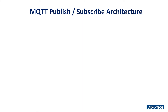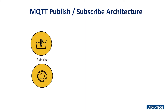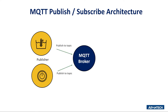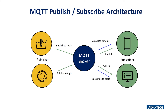From the MQTT publish and subscribe architecture, we can better understand how MQTT protocols work in IoT environments. Publishers such as remote temperature sensors or power meters publish real-time data to an MQTT broker. The MQTT broker acts as an intermediary between publisher and subscriber. It receives messages published by the publisher, filters the messages, and sends them to the subscriber, such as laptops and computers. MQTT protocol can decide to forward messages to certain subscribers by the topic of the message.